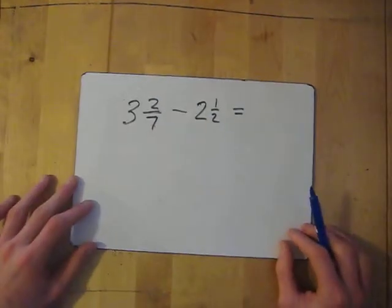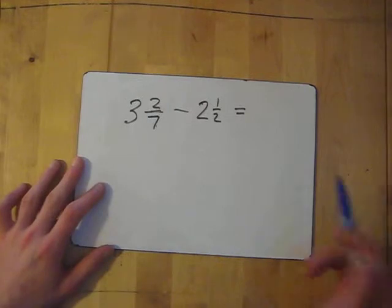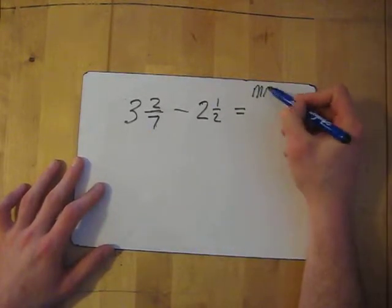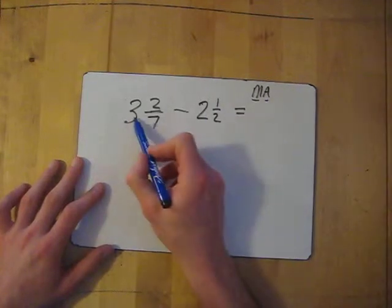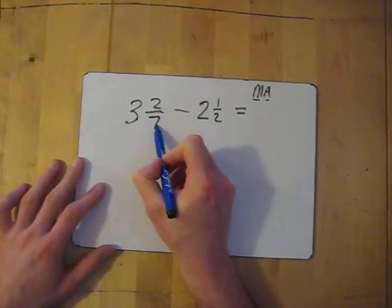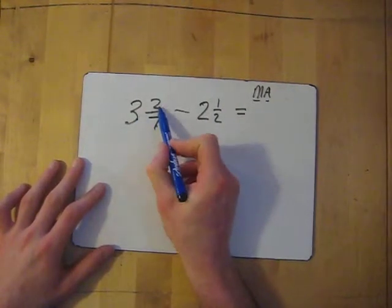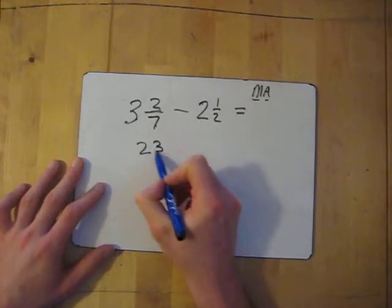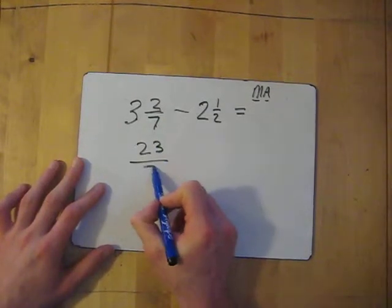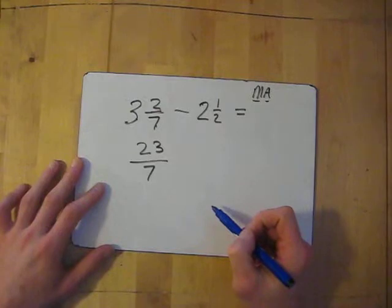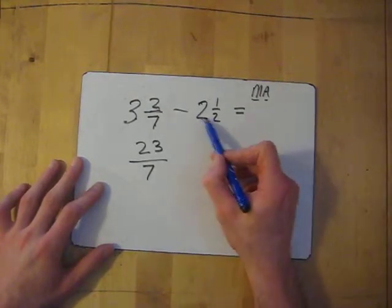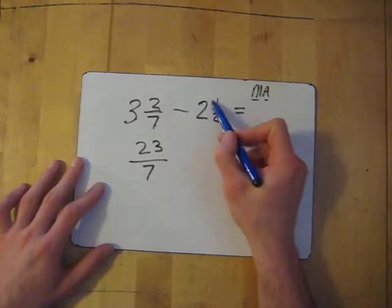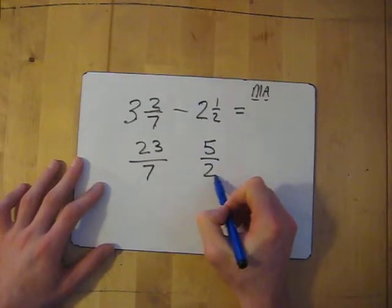Let's try another one. We've got three and two-sevenths take away two and a half. First things first, convert our mixed numbers into improper fractions using multiply and add. Three times seven is twenty-one, plus two is twenty-three — so twenty-three over seven. Then two times two is four, add the one which gives me five — so five over two.